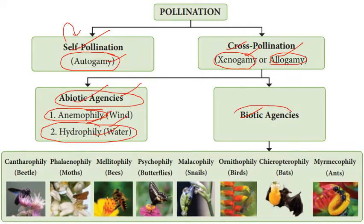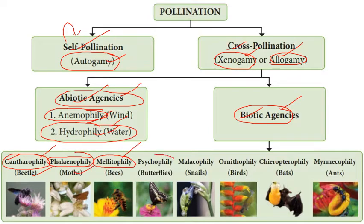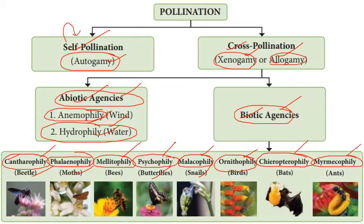Biotic agencies are the living organisms that take part in the pollination process. These include: cantharophily — pollination by beetles; phalenophily — by moths; melittophily — by bees; psychophily — by butterflies; malacophily — by snails; ornithophily — by birds; chiropterophily — by bats; and myrmecophily — by ants. These are different agencies which help transfer pollen from one plant to another to ensure cross-pollination.